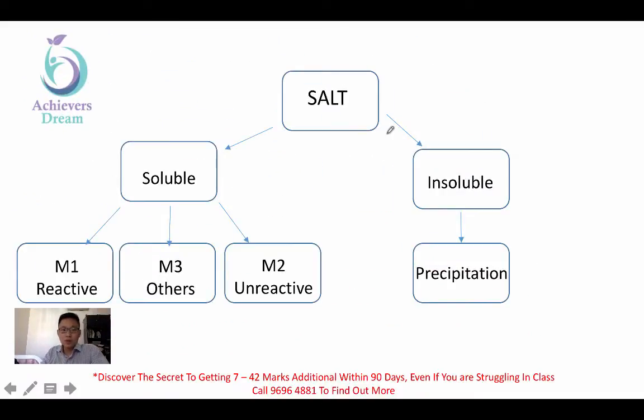So once you know about the three different reactions which I'm going to do later, you must ask yourself whether salt is soluble or insoluble. If it's insoluble, it's straightforward. You use precipitation. Precipitation is just using two soluble salts together. Soluble salt plus soluble salt gives you insoluble salt plus soluble salt. Whereas for soluble salt there are three methods. Method one, method two, method three. One is for reactive metals. Number two is for unreactive metals. Three are for others. Let me elaborate this with the reactivity series.